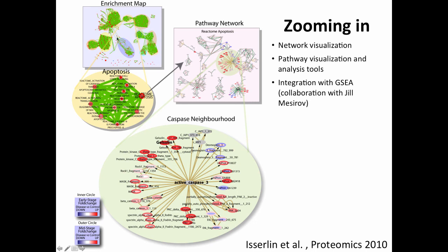Enrichment map and pathway enrichment analysis give you a 10,000-foot view of your data in terms of pathways. You want to use this to identify interesting pathways, and then zoom in. In this example, we zoomed into apoptosis - one of the circles in your enrichment map is a specific pathway in Reactome. We then went to the Reactome pathway database, loaded up the actual pathway in Cytoscape, overlaid our protein expression data, and could see that only a couple of parts of this pathway were really differential. We then further zoomed into one little neighborhood - proteins that interact with caspase - to keep data in context.